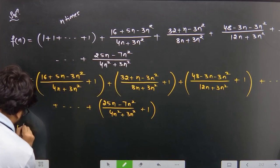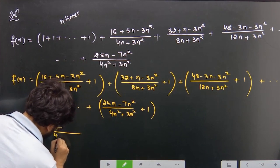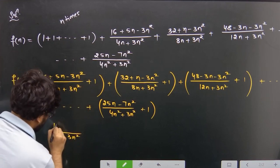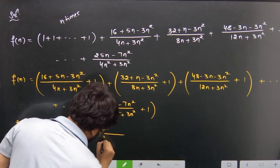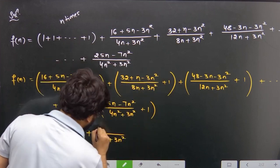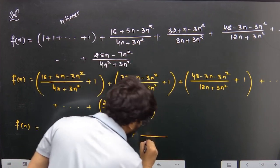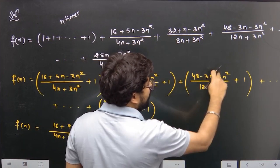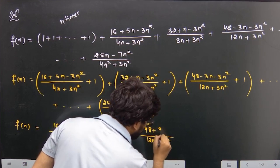Now we simplify using LCM. The LCM is (4n + 3n²). Simplifying gives 16 + 9n for the first term. The second term has LCM (8n + 3n²), and after cancellation the numerator becomes 32 + 9n. Similarly, the next term has LCM (12n + 3n²), and the numerator becomes 48 + 9n.